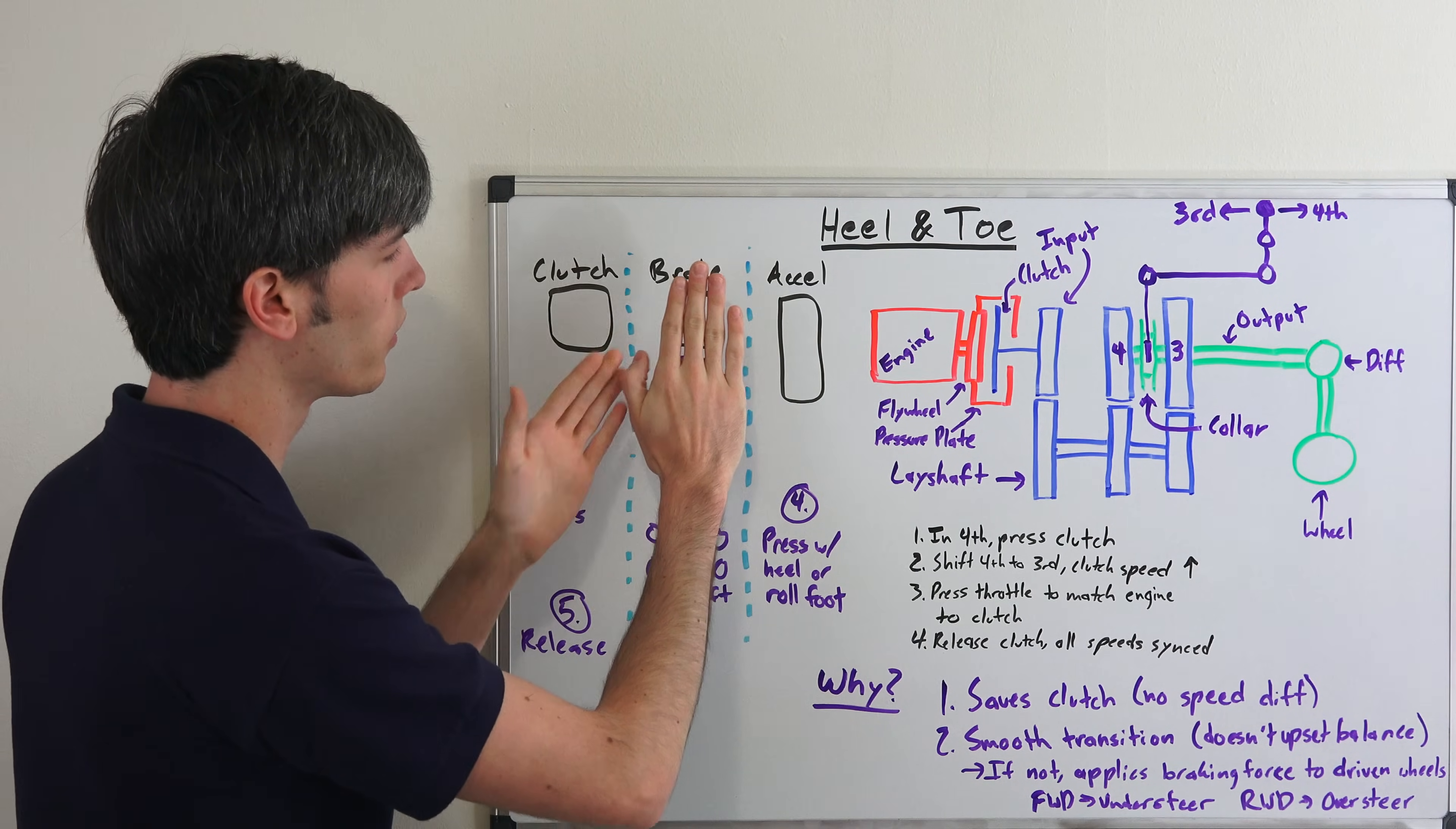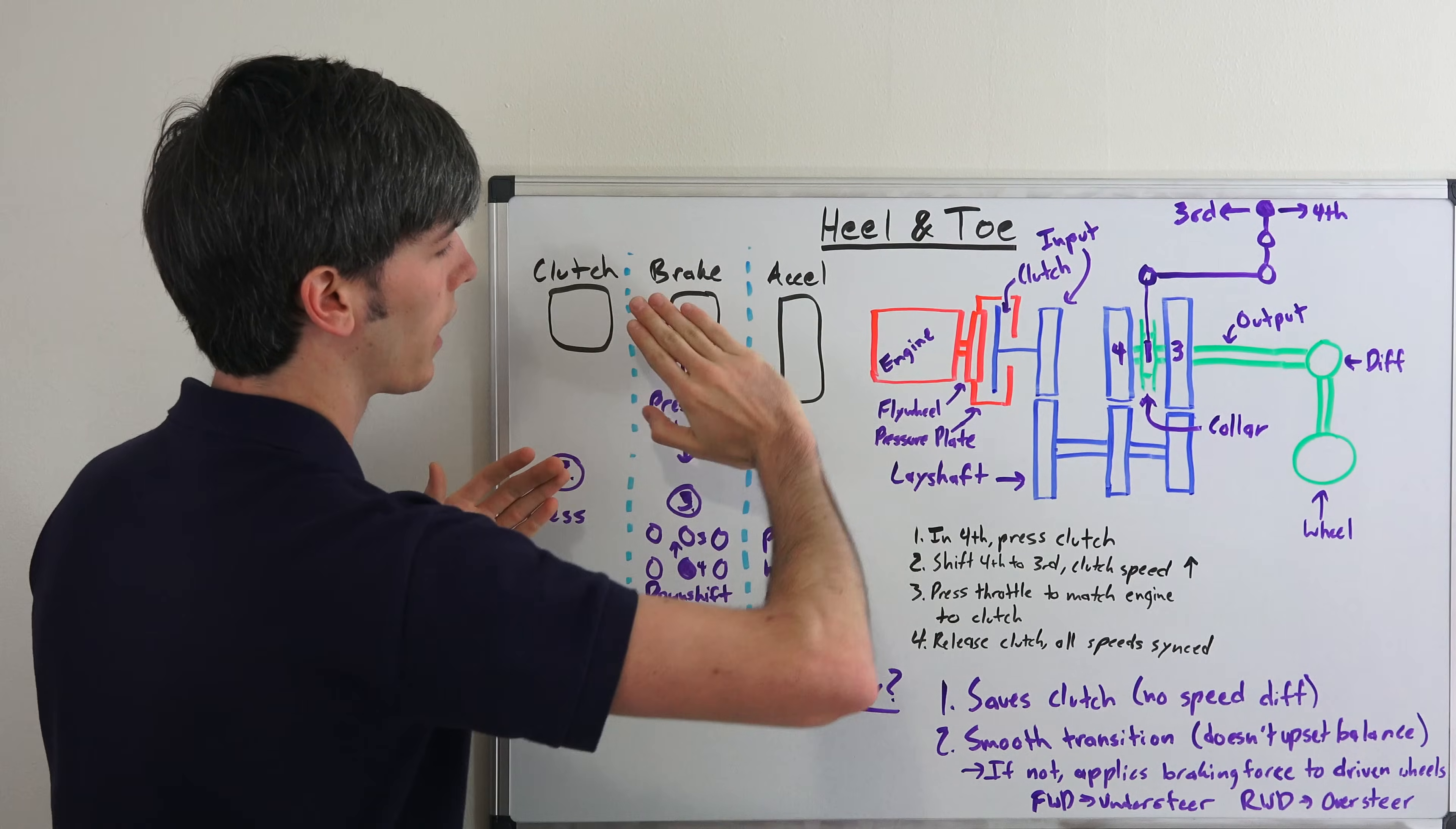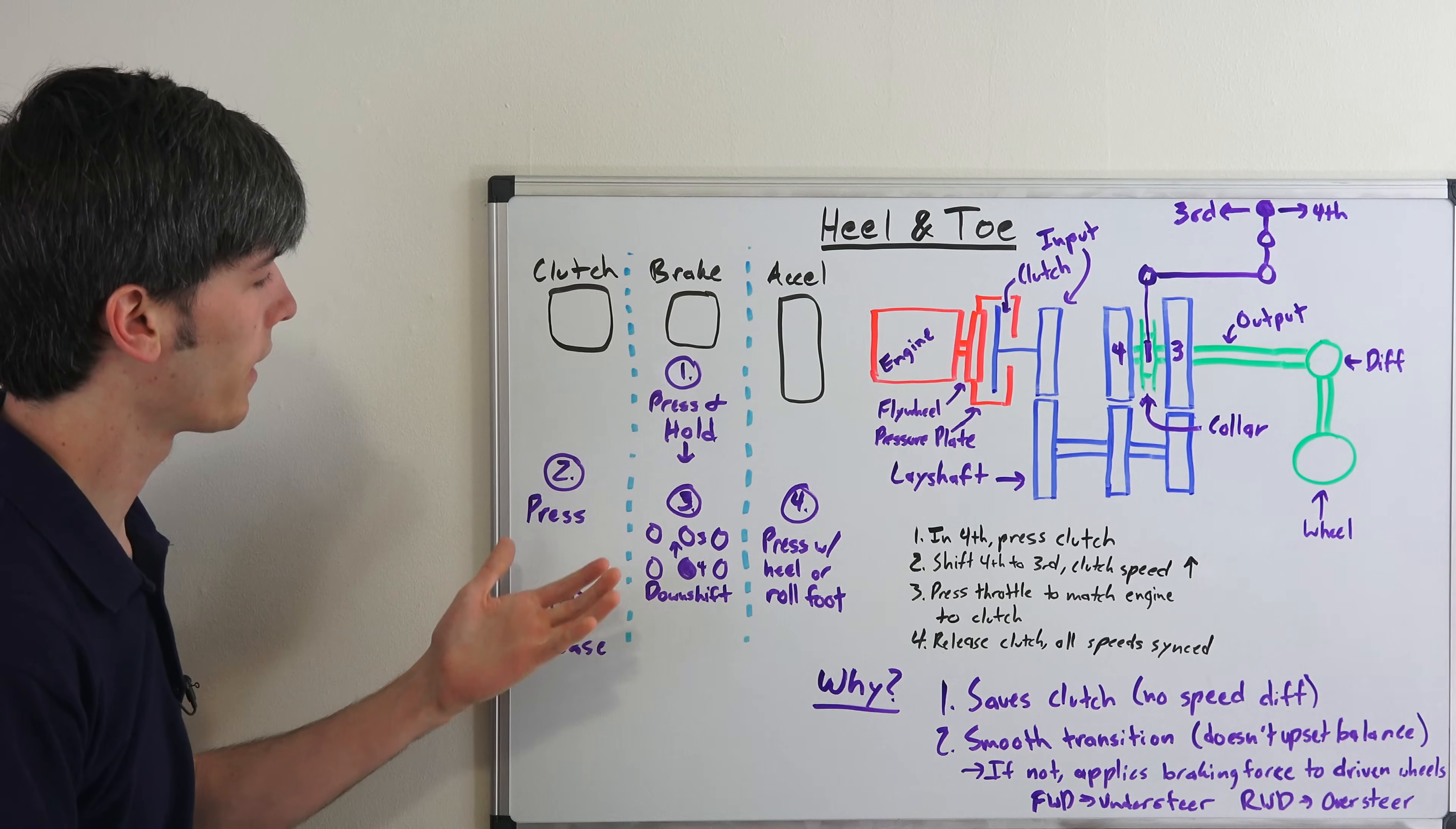So there's a couple ways this is done and it kind of depends on the pedal spacing. If the pedals are really close together, you can simply have your foot and then just kind of roll it over onto the throttle. If it's spaced further apart, then you may end up rotating and using your heel, which is how it gets the name heel and toe. You rotate over and tap the accelerator with your heel.